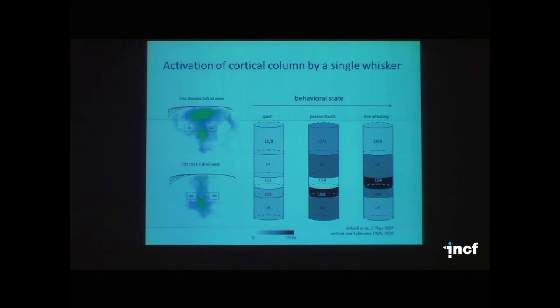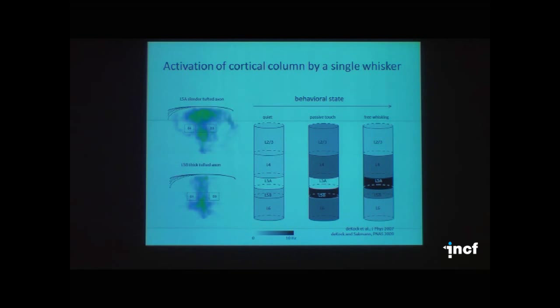This is very important for rats because they rely on whisker information and can make very fast decisions — within 100 to 200 milliseconds — based on a single whisker touch. So the thick tufted cell type seems responsible for this fast decision making, whereas the slender tufted neurons, with their long latencies, seem involved in higher functions: coordinating whiskers, coordinating whiskers with eye movement and head position, as suggested by their projections to the dysgranular zones.